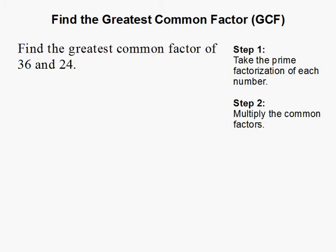Find the greatest common factor. Find the greatest common factor of 36 and 24. This means to find the greatest number that can divide evenly into both 36 and 24.